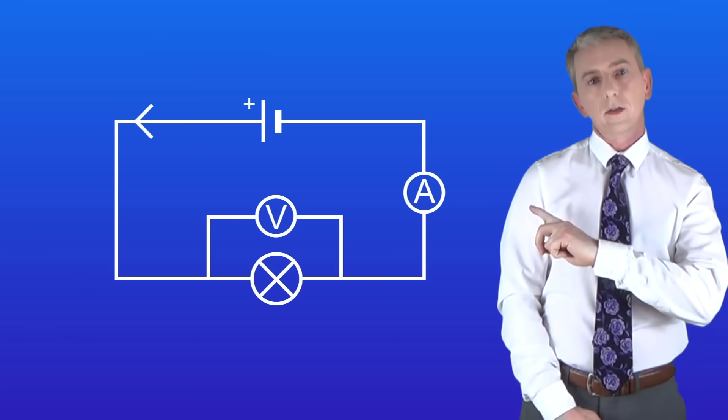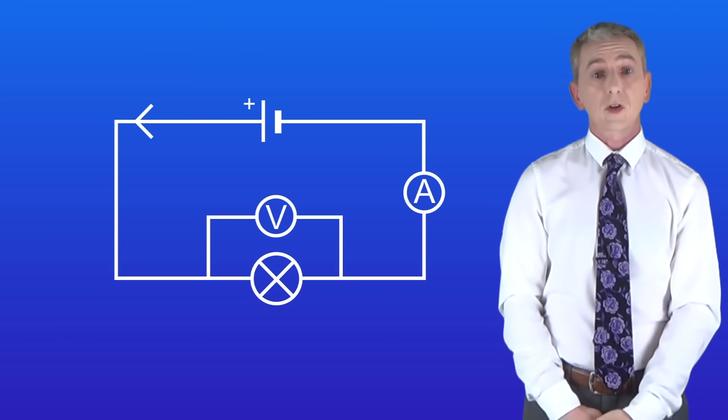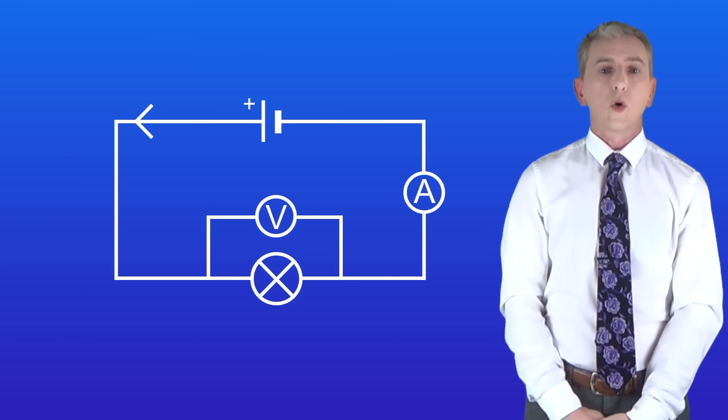In this circuit I've got a filament lamp and I'm going to change the potential difference and measure the current just like I did before with the resistor.